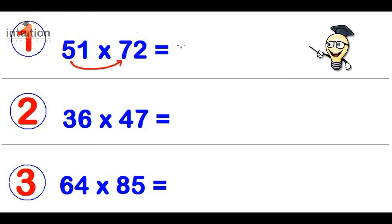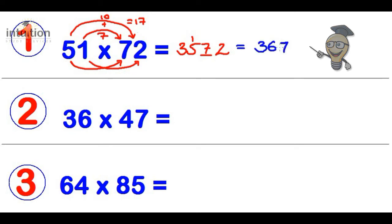That's 5 times 7, which is 35. Leave a gap. Then 1 times 2, which is 2. Then we do 5 times 2, which is 10. Then we add that to 1 times 7, which is 7. That totals to 17. So put 7 here, carry the 1. So the final answer is 3672.